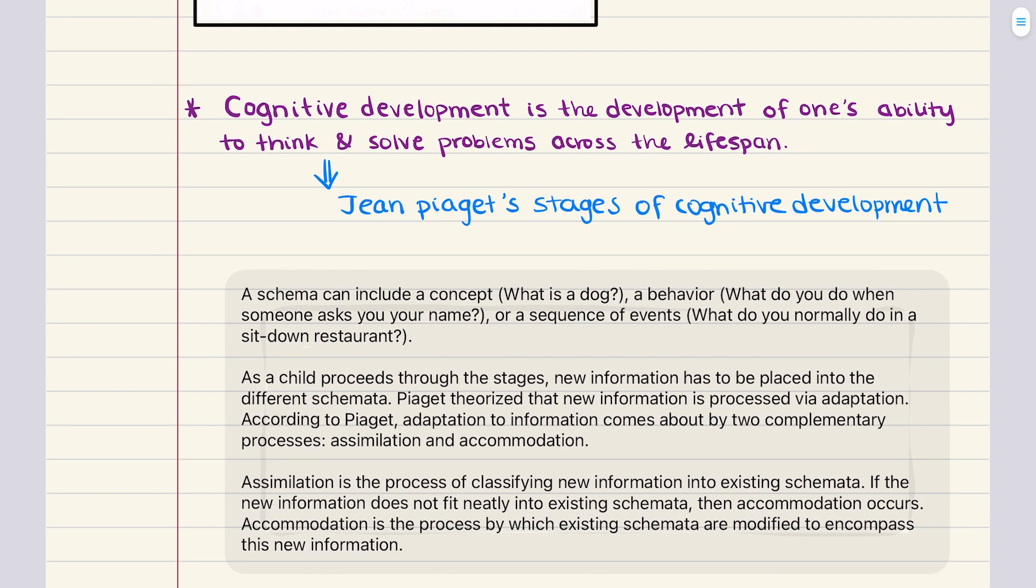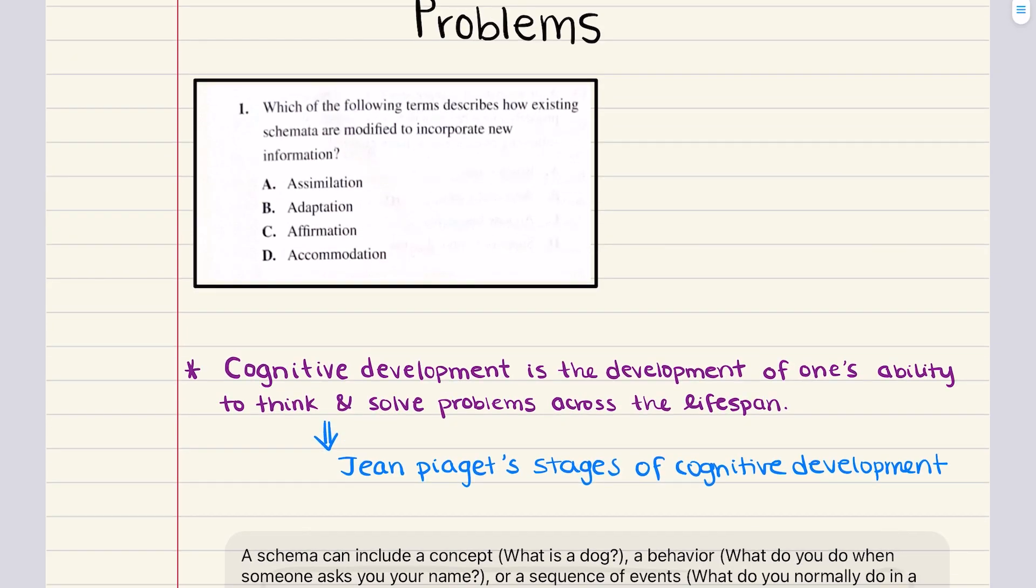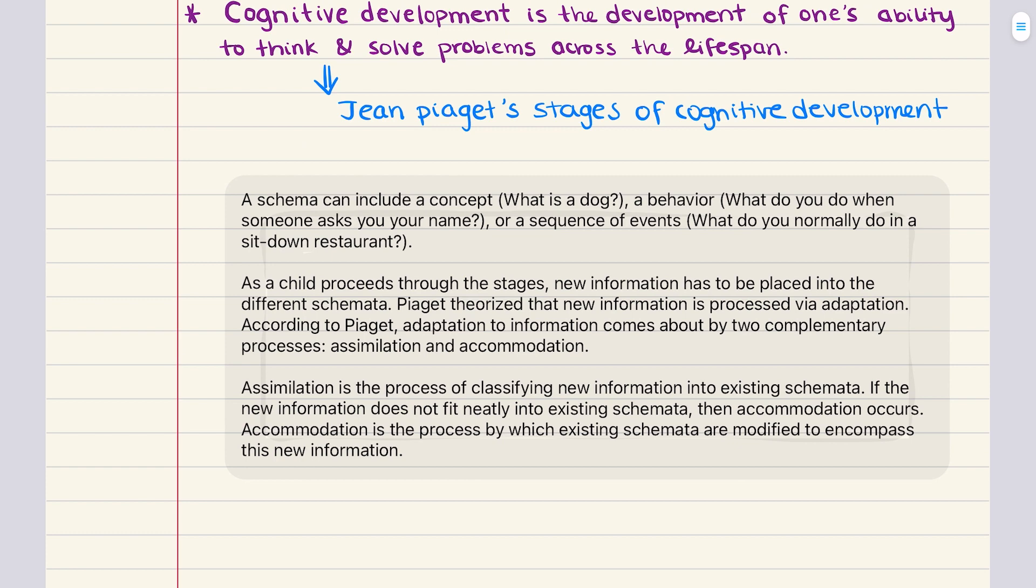When we talked about cognitive development we said it's the development of one's ability to think and solve problems across the lifespan and then we focused on Piaget's stages of cognitive development. Before we even talked about the four stages we discussed how a schema can include a concept, a behavior, or a sequence of events. As a child proceeds through the stages of cognitive development new information has to be placed into different schemas. Piaget hypothesized that new information is processed by adaptation, and according to him adaptation comes by two complementary processes: assimilation and accommodation.